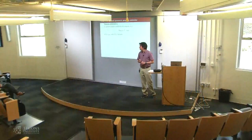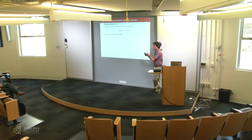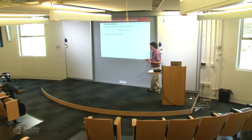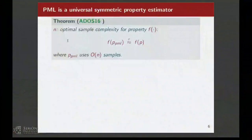This approach is going to be competitive with respect to the best estimator for symmetric properties, under some technical conditions, for a wide class of symmetric properties. You lose a constant factor: if an optimal estimator uses n samples, this one uses order n. There is a technical Lipschitz-like condition on the optimal estimator that I'm hiding, but the examples on the previous slide satisfy this theorem. You should look at the paper for more details.